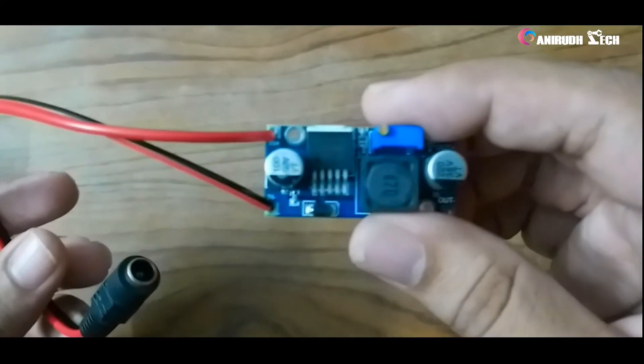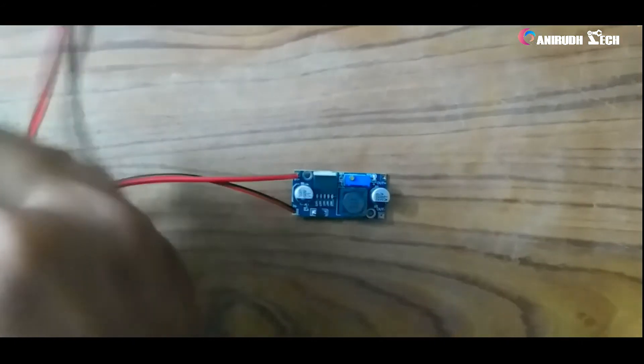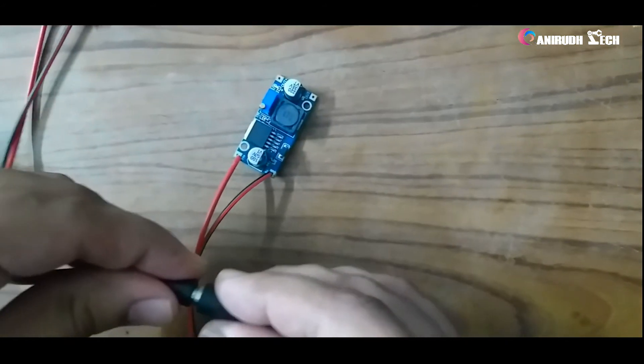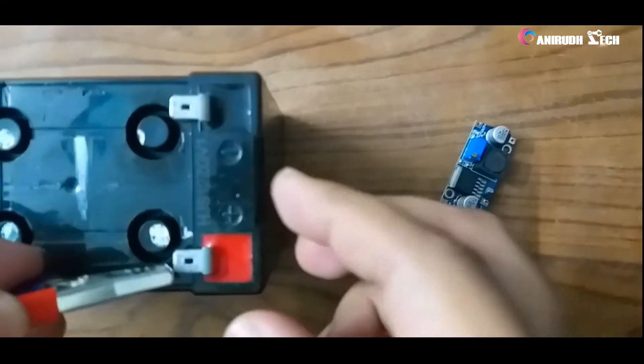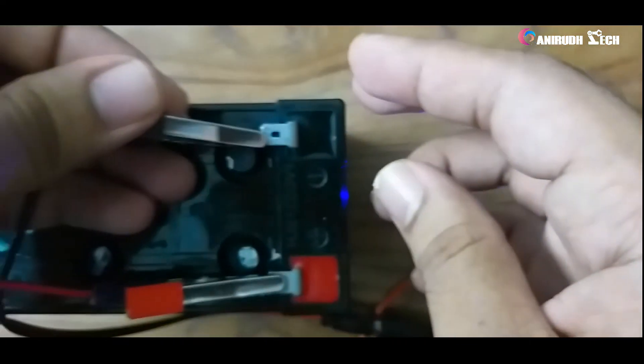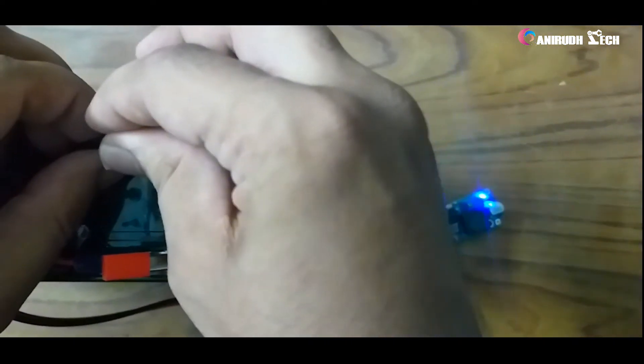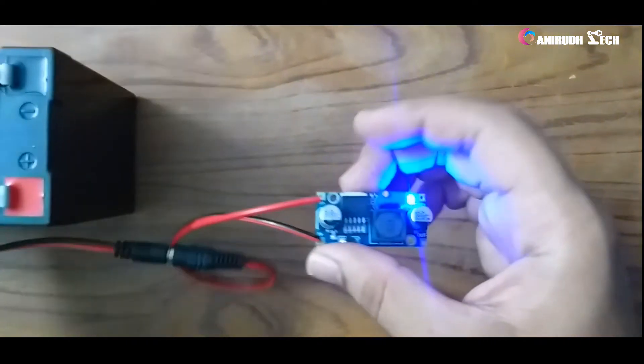You can see here, the wires are soldered. Now we can connect it to the battery using a main wire, connecting it to the battery. Positive to positive. Don't change the polarity, negative to negative. You can see here, the power light turned on.